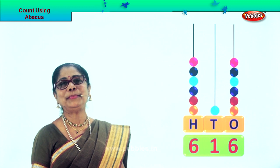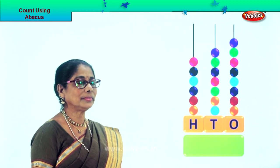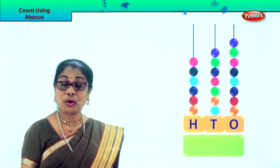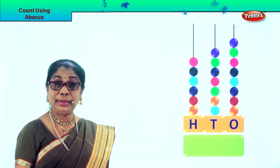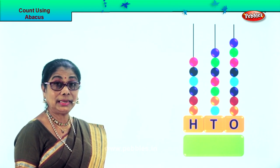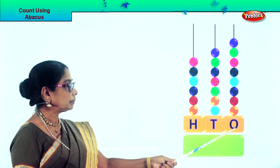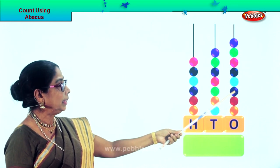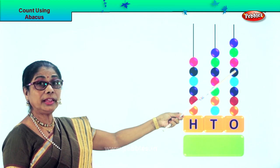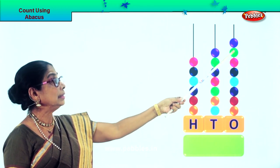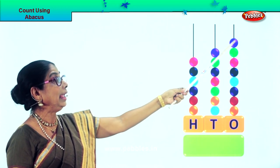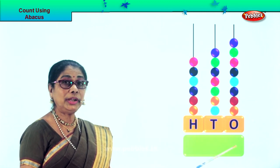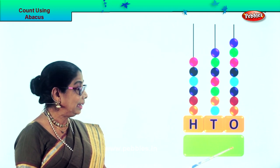Let's take another sum. What do we count first? We count all the 1s — beads on the 1s first. Let's count together: 1, 2, 3, 4, 5, 6, 7, 8. There are 8 beads in the 1s place, so we put down number 8 here.